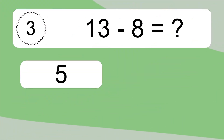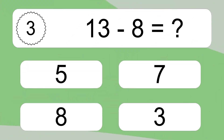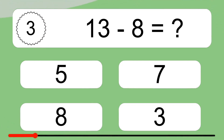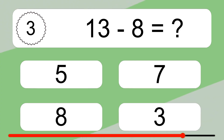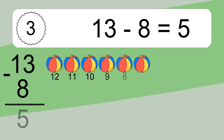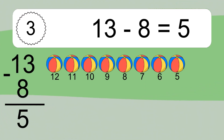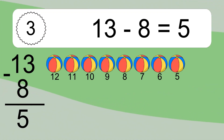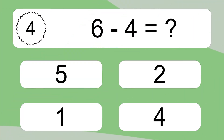13 minus 8 equals what? 13 minus 8 equals 5. Let's count it. 12, 11, 10, 9, 8, 7, 6, 5.